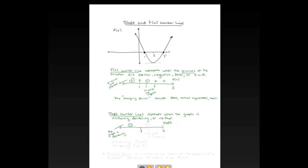Moving past x = 3 from left to right, the graph starts to rise and continues rising, so I put a plus there. This means the graph is increasing from 3 to infinity — we include 3, putting a hard bracket on it. The graph is decreasing from negative infinity to 3, and increasing from 3 to infinity.